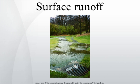Saturation excess overland flow occurs when the soil is saturated and the depression storage is filled, and rain continues to fall — the rainfall will immediately produce surface runoff. The level of antecedent soil moisture is one factor affecting the time until soil becomes saturated. This runoff is called saturation excess overland flow or saturated overland flow.